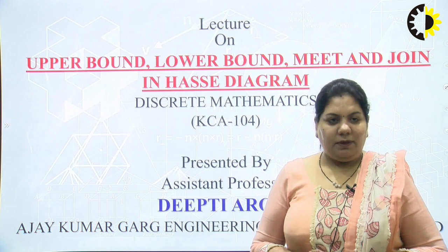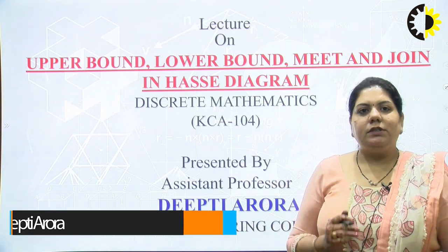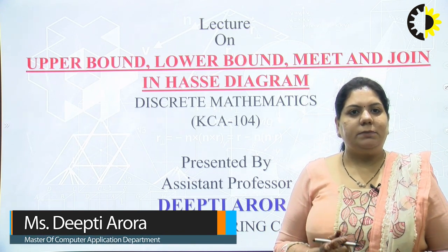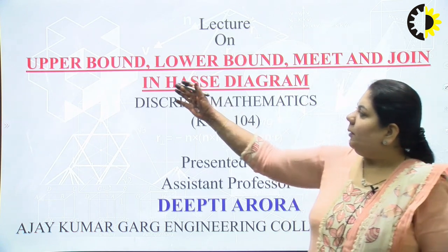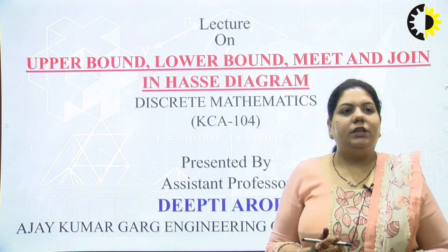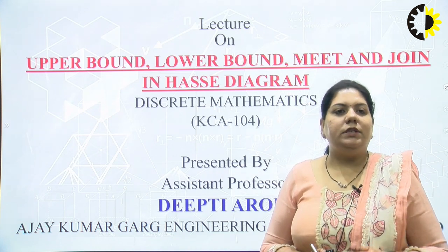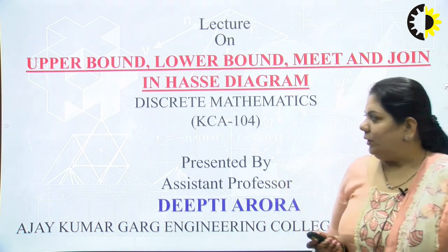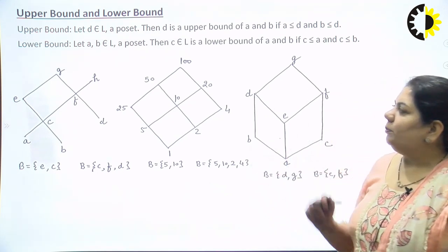Jai, and all of you. I'm Deepti Arora from the MCA department. In the previous lecture, we studied about Hasse diagrams, their maximal and minimal elements, and maximum and minimum elements. In today's video lecture, we will talk about upper bound, lower bound, meet and join — what these relations are, how we can identify them in a Hasse diagram, and their use in a Hasse diagram or lattice.